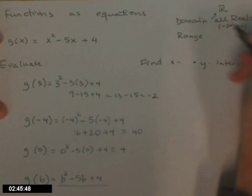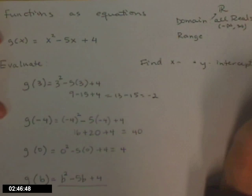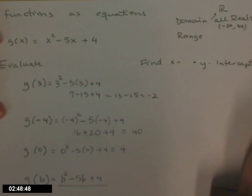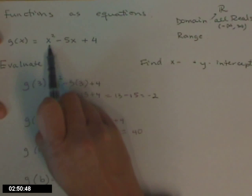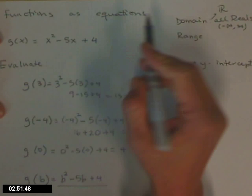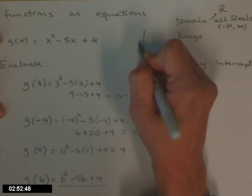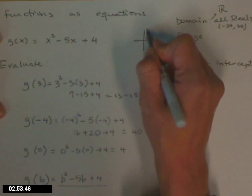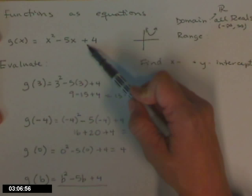And for now, when they ask about the range — these are all of the y values. This is a quadratic function, and its graph looks like a parabola, but to get an accurate graph we'd need more steps. So for now, we'll say we need a graph to find the range.